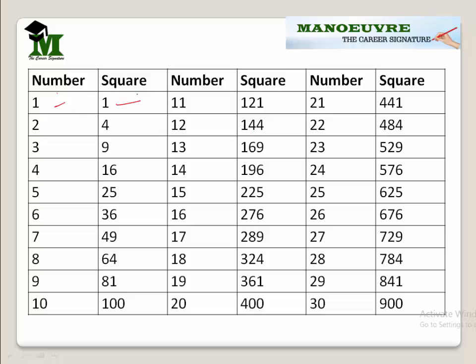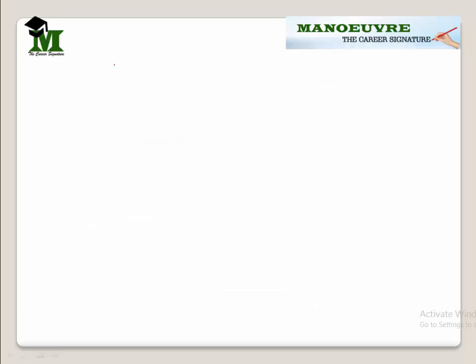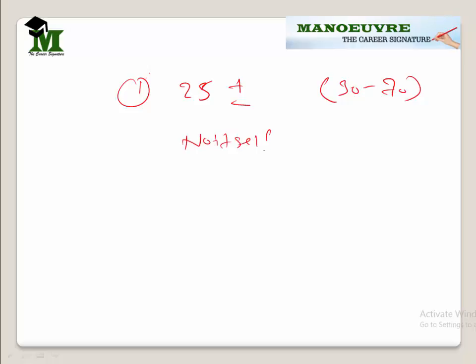I am assuming that you know the squares till 1 to 30. On the basis of this, we will find out the squares. There are two formulas. The first formula uses 25 plus or minus to find out the square from 30 to 70. The second formula uses the number itself plus or minus to find out the square from 70 to 130. Let's use the first formula first.